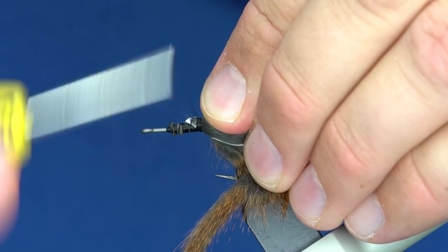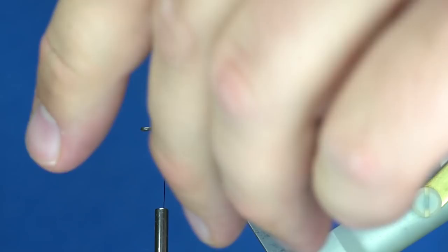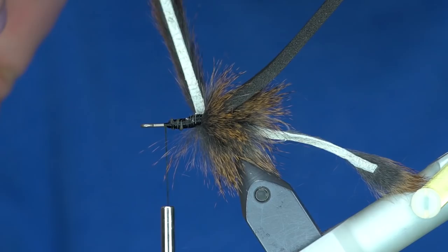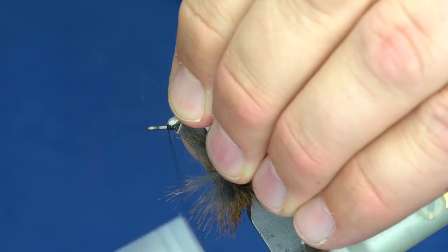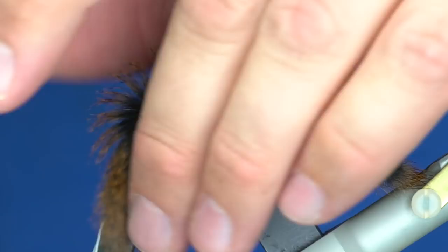I'm going to reattach my squirrel now and just wrap that forward. Sometimes the squirrel piece is going to be too thick and you don't want to get it too bushy, so we'll tie that off with a little bit of room left at the head and trim it off.